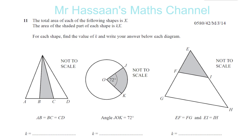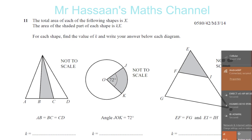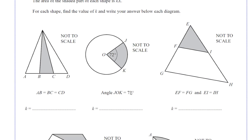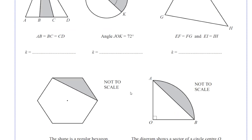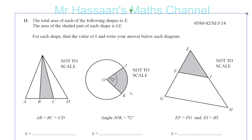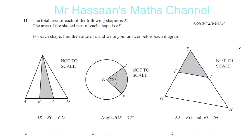Welcome back. I'm going to do question number 11 from May-June 2014 Paper 4 Variant 2. This is a question which is all about areas, and there's something about similarities, and a few other topics involved as well — for example, sectors, segments and so on. The total area of each of the following shapes is x. The area of the shaded part of each shape is k times x. For each shape, find the value of k and write your answer below each diagram.